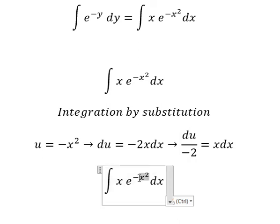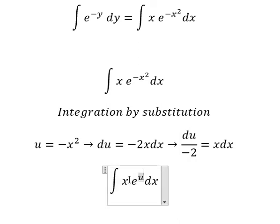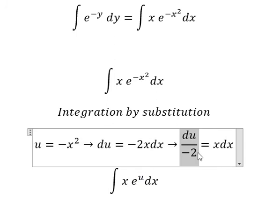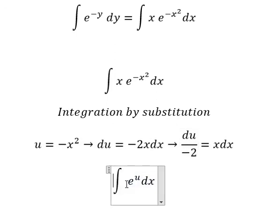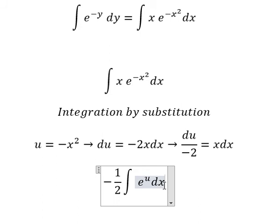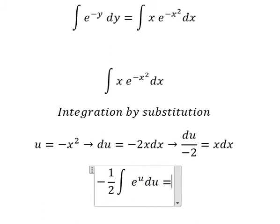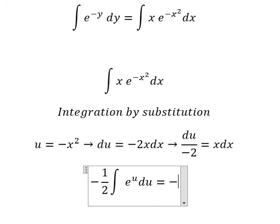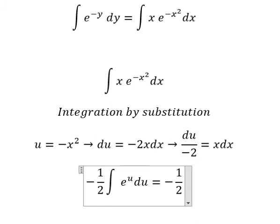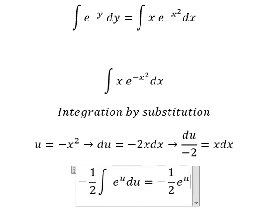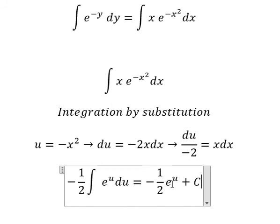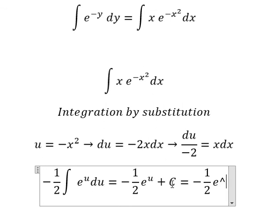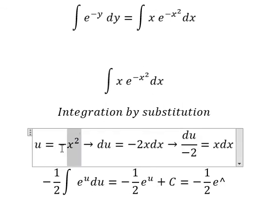So we change x e to the power of negative x squared dx to e to the power of u times du over negative 2. The integration of this gives us negative one-half e to the power of u plus C, which equals negative one-half e to the power of negative x squared plus C.